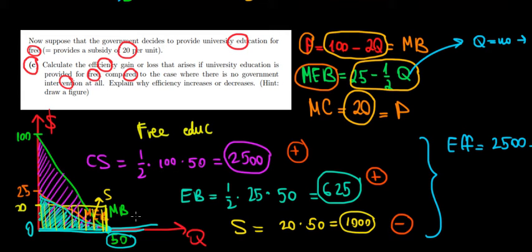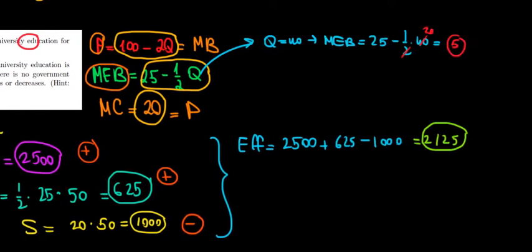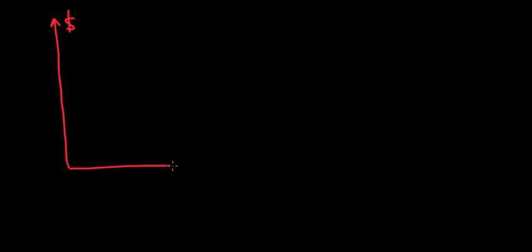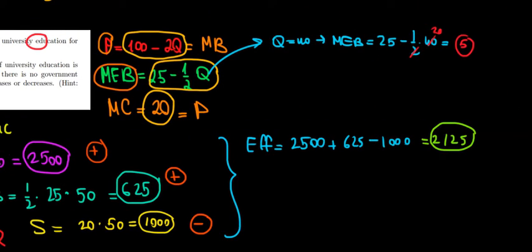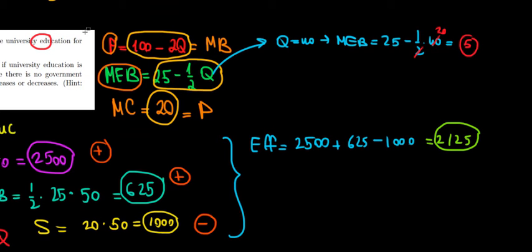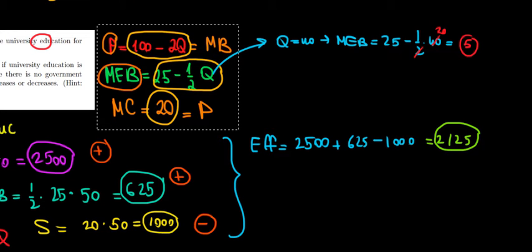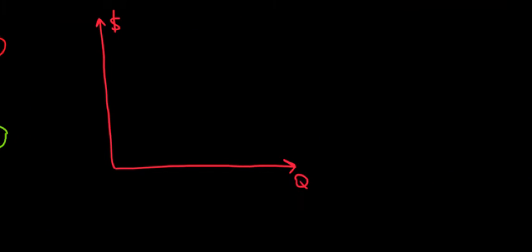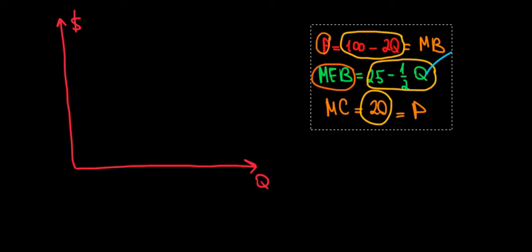In this video, we're going to compute the efficiency under private education and do it on a graph. So let's go over here to the right. We'll have the relationship between dollars and quantity. We also need the data, so we'll crop it and paste it over here, and then plot it on this graph.